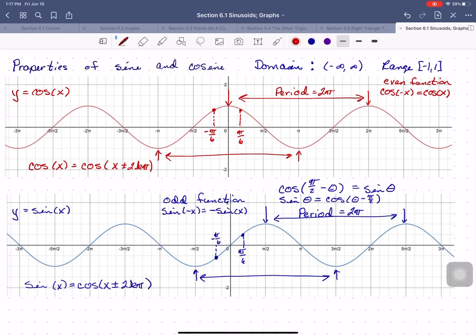I almost forgot. This distance from the midline—the line around which this curve oscillates—is called the midline. For natural sine and cosine, the midline is, of course, the line y = 0. The midline is a line, so we want to write the equation of a line whenever we're talking about the midline.